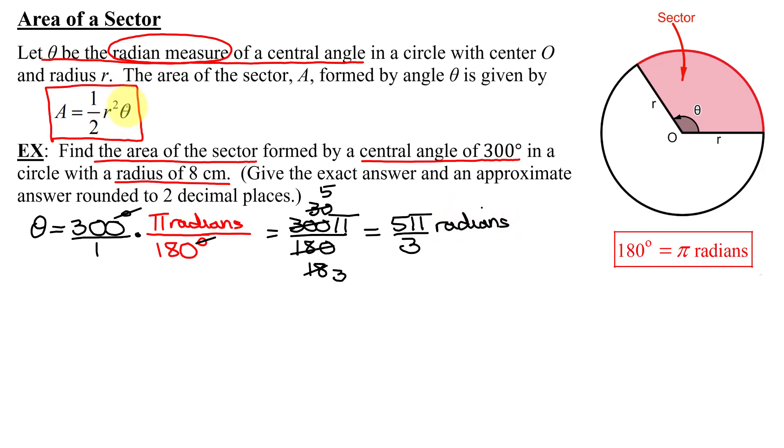So now I have theta in radians, and I know my radius. I can find the area of the sector. So it's just 1 half times r squared. Well, r was 8, so it's 8 squared. Since half was a fraction, I'm going to turn 8 squared into a fraction by dividing it by 1, multiplied by my angle of 5 pi divided by 3. So all we have to do is simplify this. 8 squared is 64. So I have 64 times 5 pi, all divided by 2 times 3.